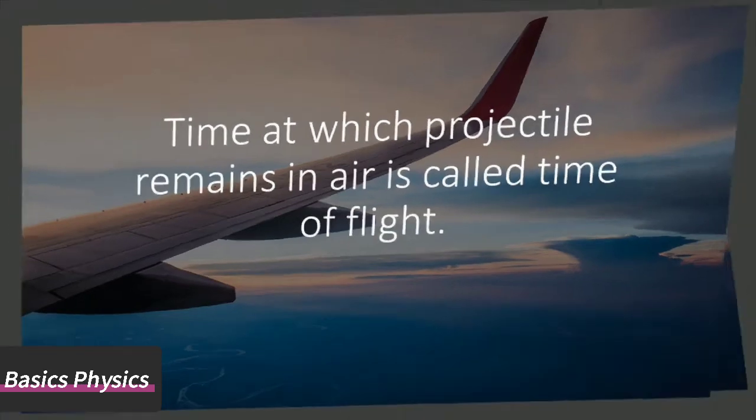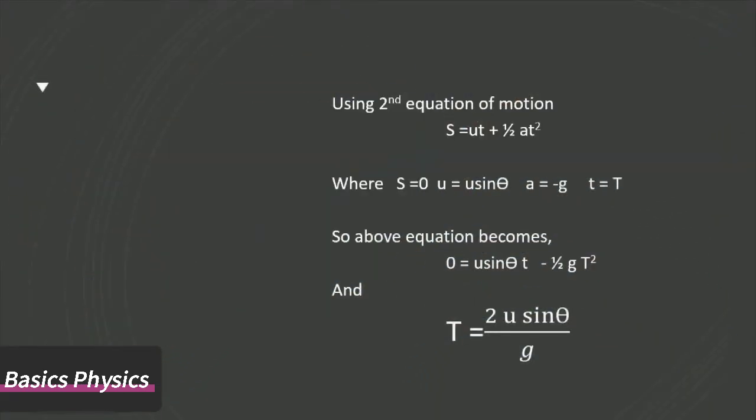To derive the relation for time of flight, using the second equation of motion: S = ut + ½at². As the height of the projectile before and after projection is zero, so put S = 0.